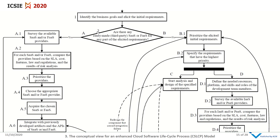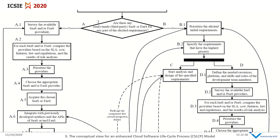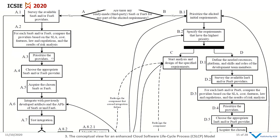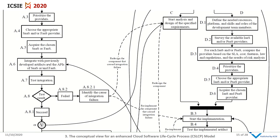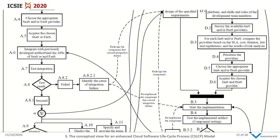In Track A, survey the available providers for SaaS or FaaS. Then, for each service, compare the providers based on the service level agreement, cost, features, law and regulations, and the results of risk analysis. Then prioritize the providers and choose the appropriate service provider and acquire the service. Next, integrate the acquired service with the previously developed artifacts or acquired SaaS or FaaS, and perform integration testing.